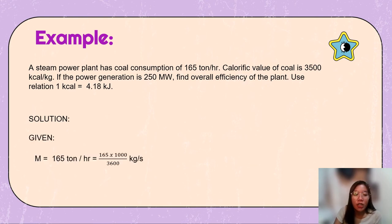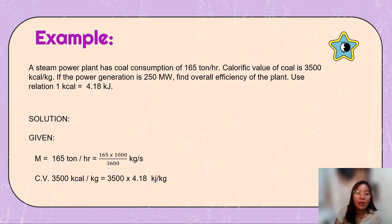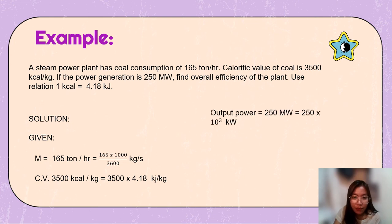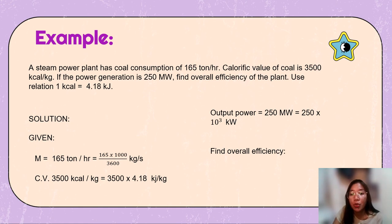Given: mass flow rate is 165 tons per hour, which converts to kg per second as 165 × 1000 ÷ 3600. The calorific value is 3,500 kcal per kilogram, which converts to kJ per kilogram as 3,500 × 4.18. The output power is 250 megawatts, which converts to kilowatts as 250 × 10³.